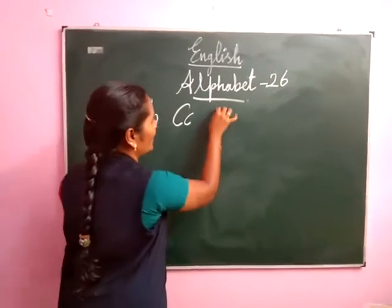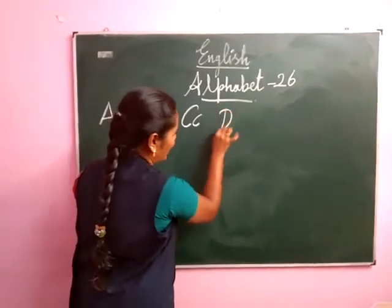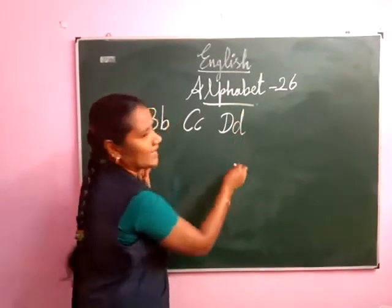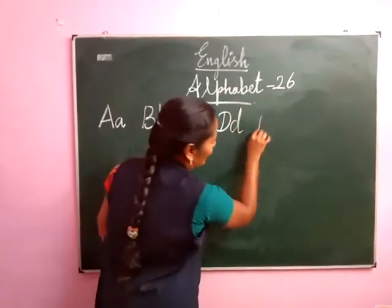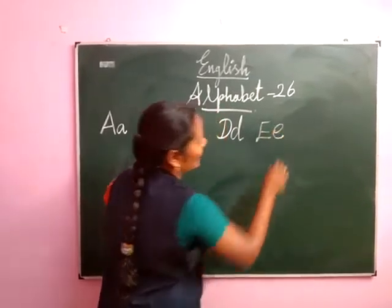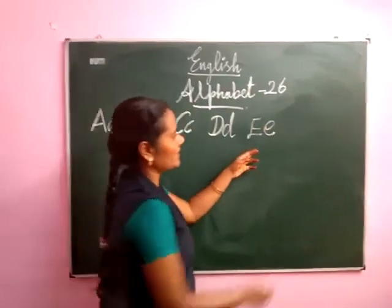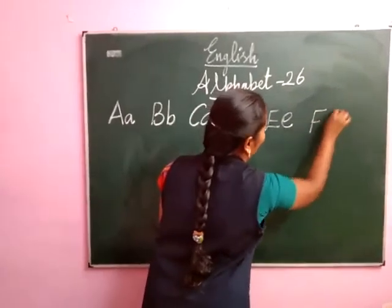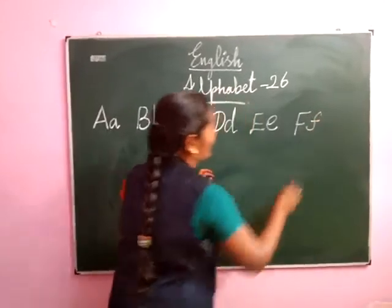Like that, you have to repeat. Capital D, small d. Capital E, small e. Very good. Next, capital F, small f.